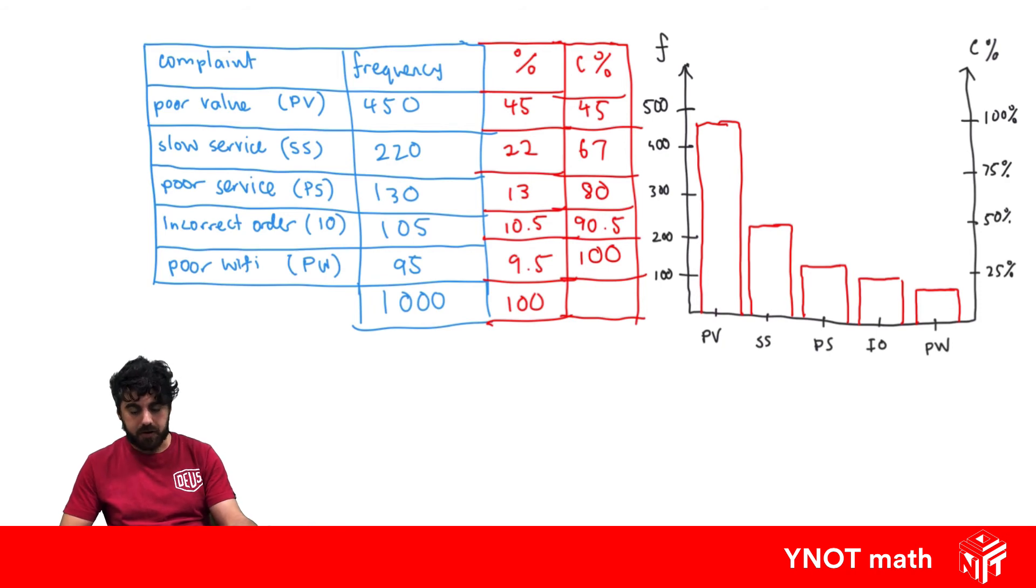Now we need a line graph to describe our cumulative percentage. We're starting off with 45% for our top one, a bit below the 50%. Up to slow service we get to 67%, then 80% for poor service, 90.5% for incorrect order, and then 100% by the time we get to poor Wi-Fi.